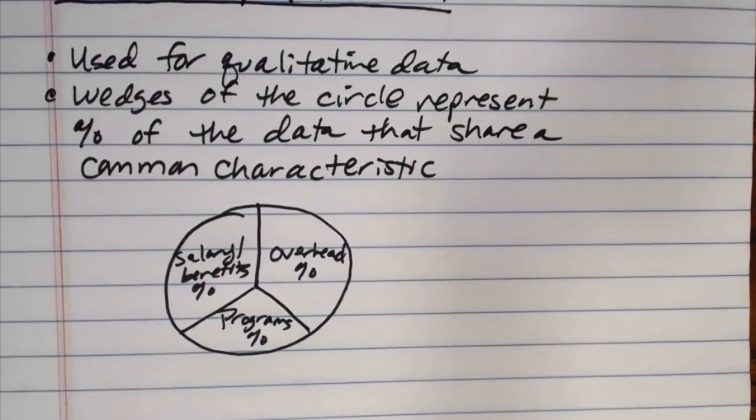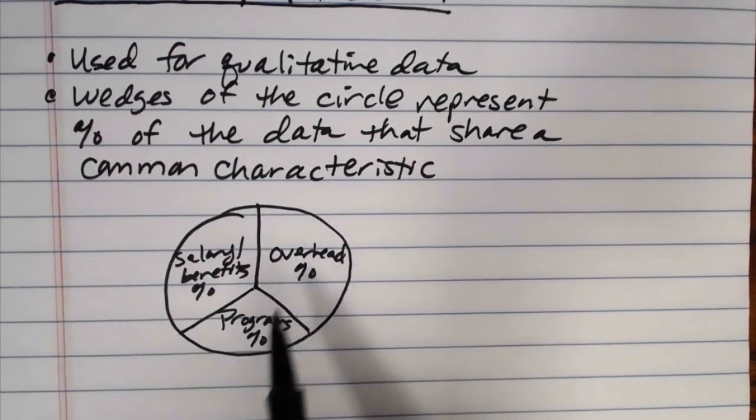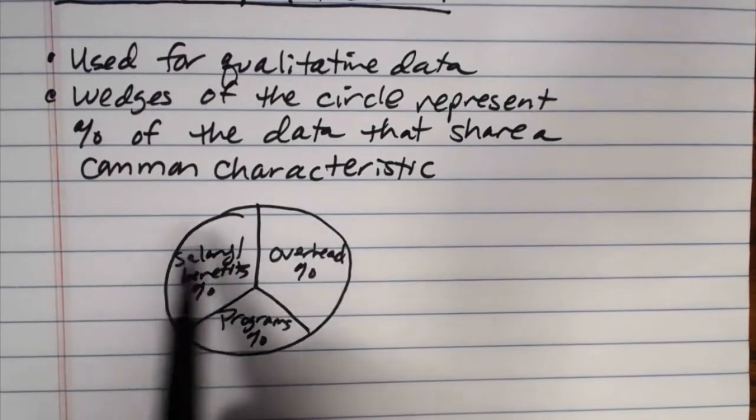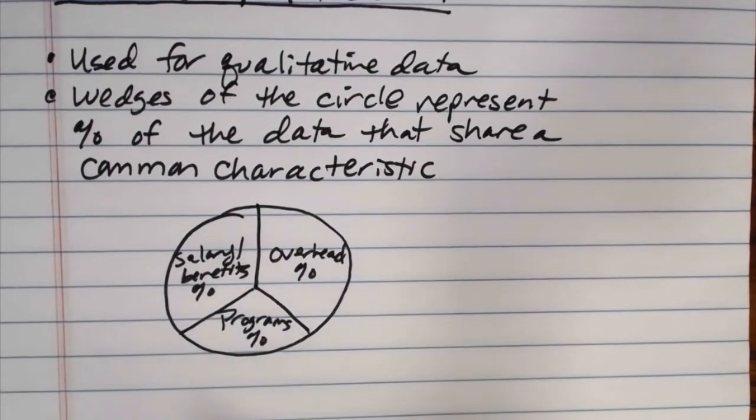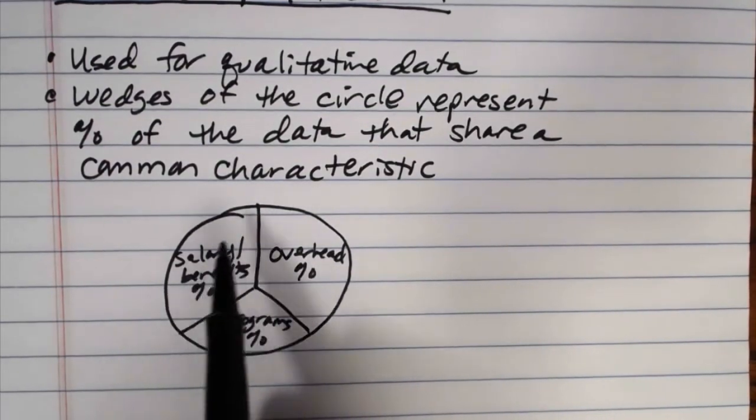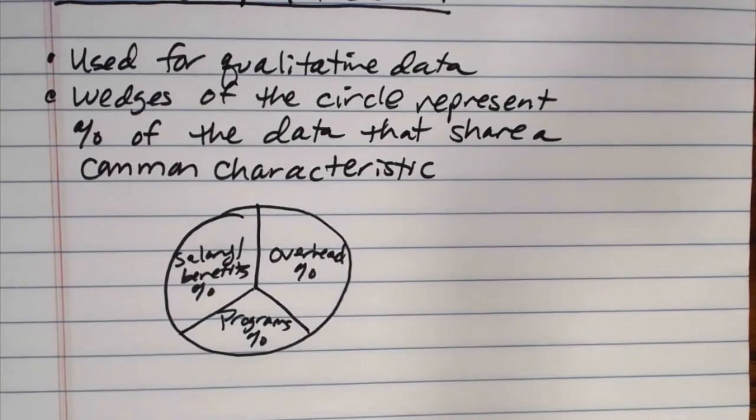So it's used for qualitative data. You'll notice that the variable here is the type of expense: overhead, salary and benefits, programs. And the proportions of the circle represent the percentage of the data that actually falls into each of those categories.